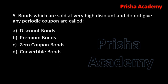Next question: bonds which are sold at a very high discount and do not give any periodic coupon — are these discount bonds, premium bonds, zero coupon bonds, or convertible bonds? The key terms are high discount and no periodic return. The answer is zero coupon bonds, because zero coupon bonds are sold at deep discount and they do not give any kind of periodic coupon.